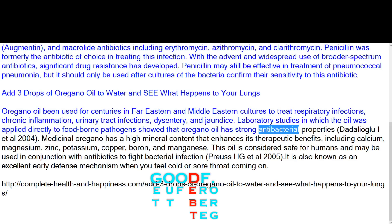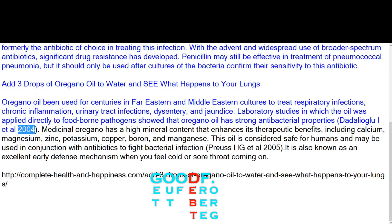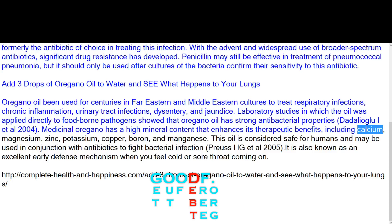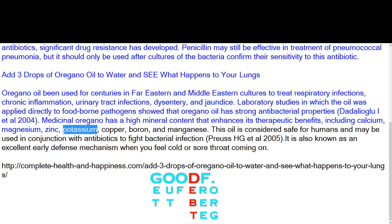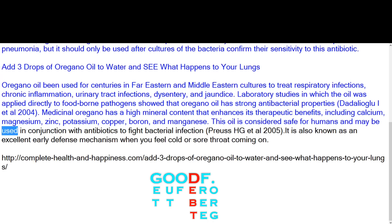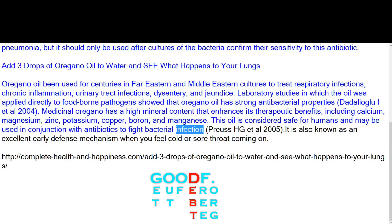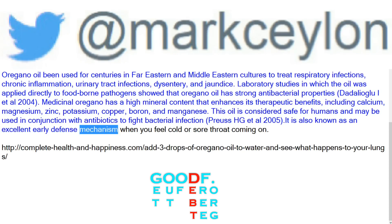Laboratory studies in which the oil was applied directly to foodborne pathogens showed that oregano oil has strong antibacterial properties. Medicinal oregano has a high mineral content that enhances its therapeutic benefits, including calcium, magnesium, zinc, potassium, copper, boron, and manganese. This oil is considered safe for humans and may be used in conjunction with antibiotics to fight bacterial infection. It is also known as an excellent early defense mechanism when you feel a cold or sore throat coming on.